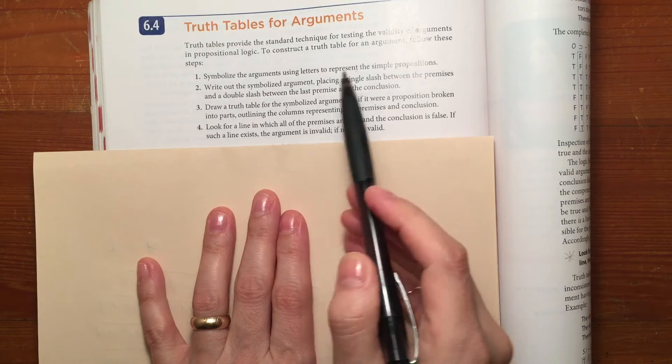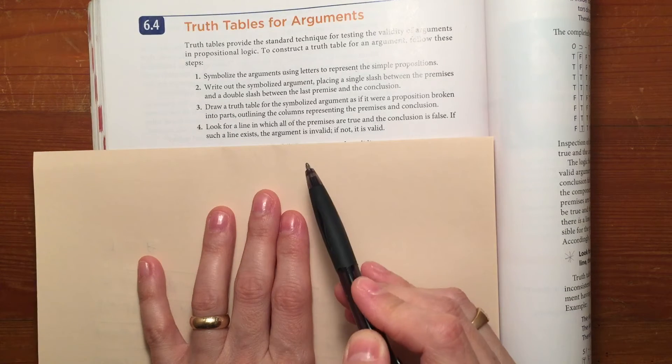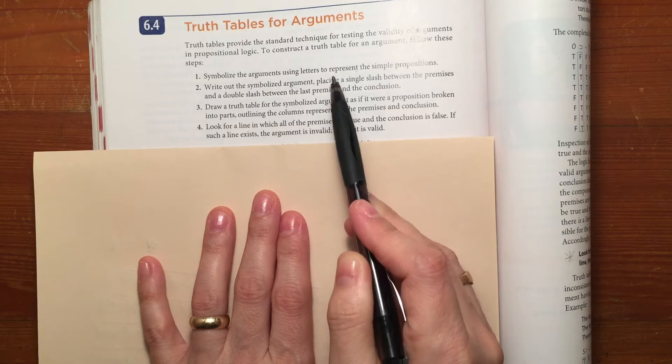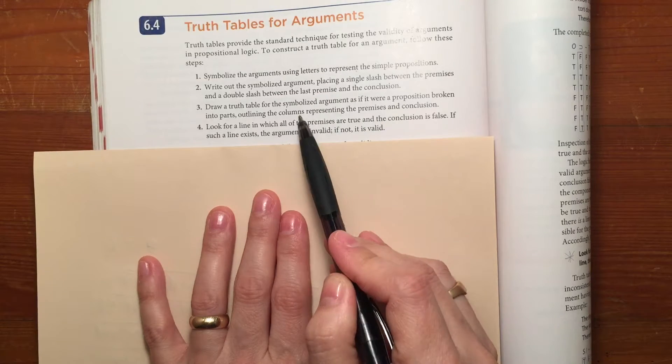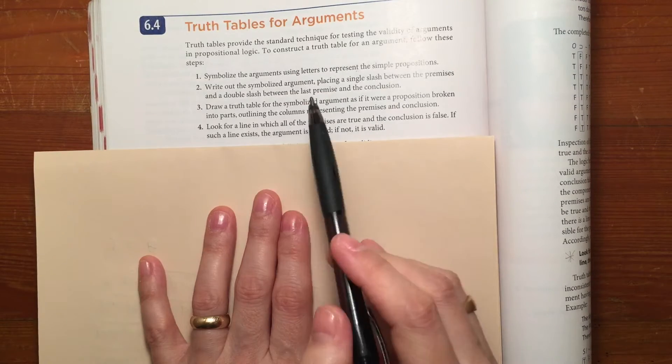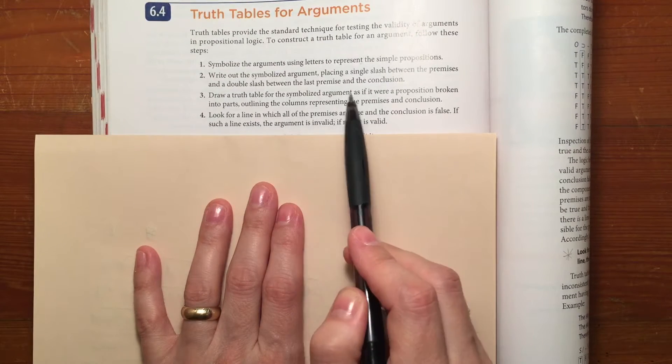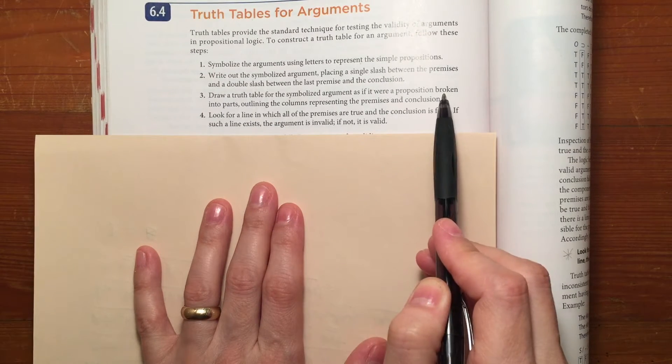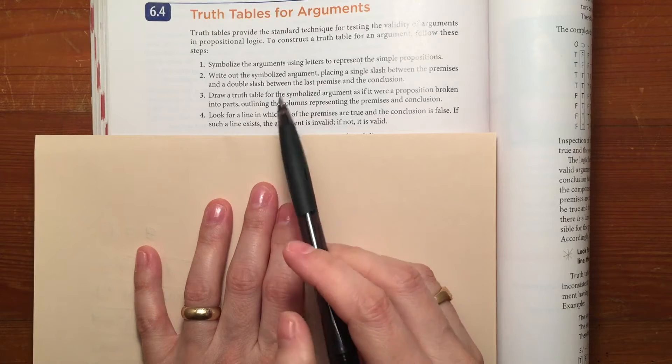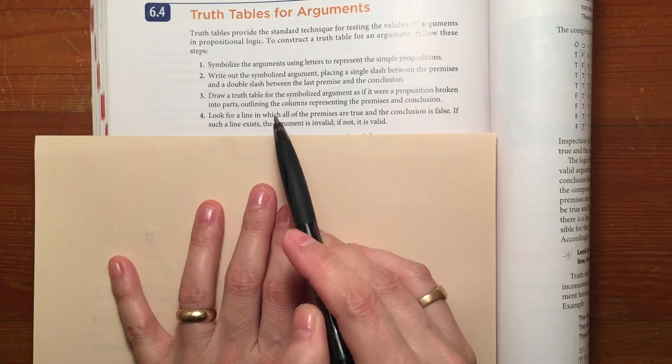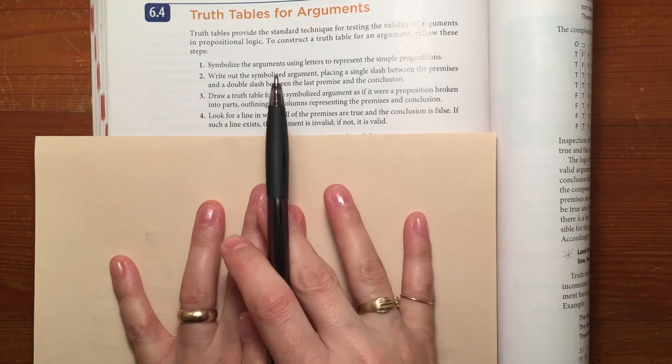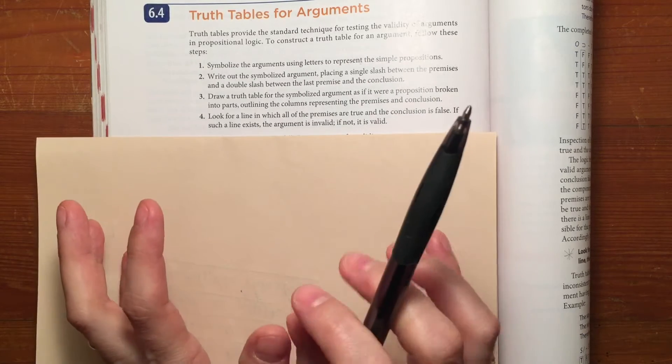You're going to write out the symbolized argument and put a single slash between each one of the premises and a double slash between the last premise and the conclusion. Then you'll draw a truth table for the symbolized argument just as if it was a proposition broken into parts. You're going to treat each premise and the conclusion as if they were in brackets or parentheses.